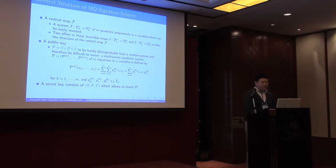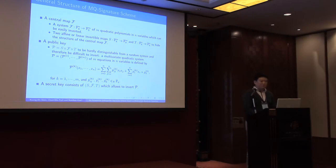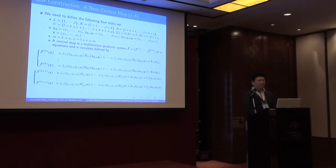In most of MQ signature schemes, a central map F is a system of N quadratic polynomials in N variables, which can be easily inverted. And S and T are two affine linear maps to hide the structure of the central map F. And a public key is P equals to S composed with F composed with T to be hardly indistinguishable from a random system and therefore to be difficult to invert. And a secret key is a tuple S-F-T. How to construct the central map F is the most important part of the construction of MQ signature scheme. So I explain about how to construct the central map in our scheme.